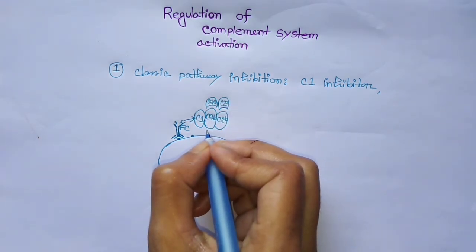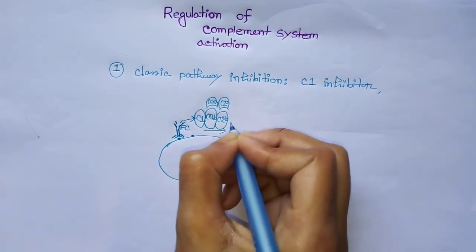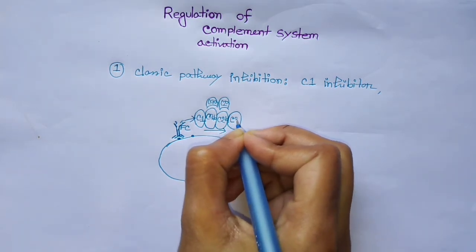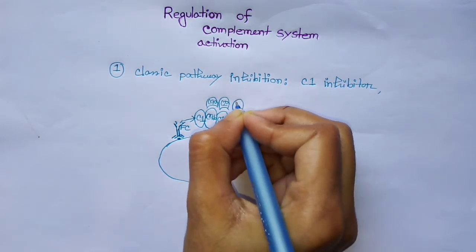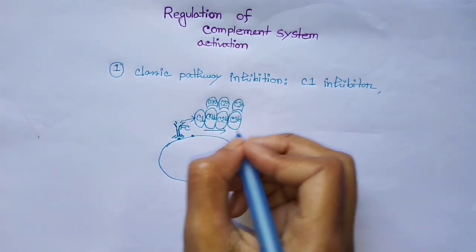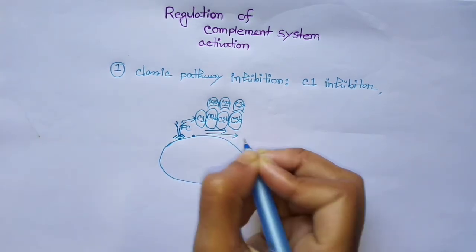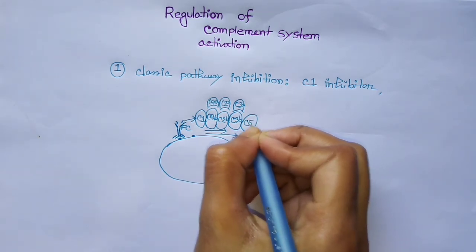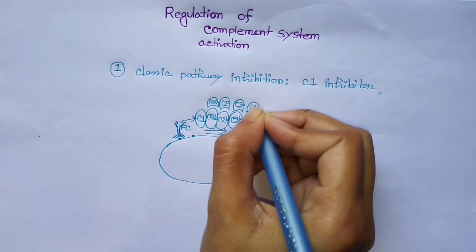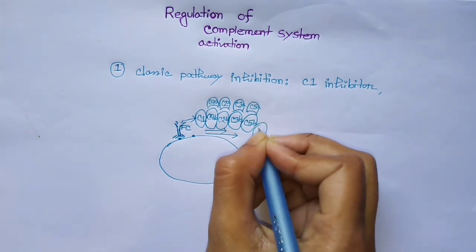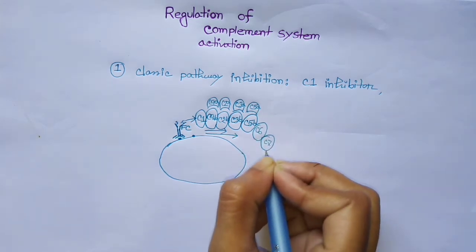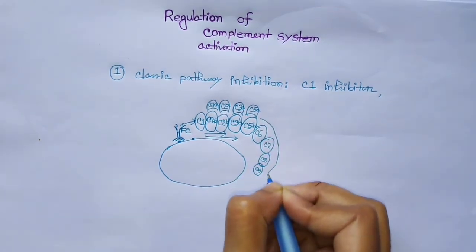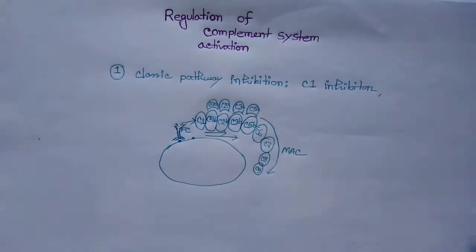Then C1 binds to C4, and C4 becomes fragmented into C4b and C4a, then C2b and C2a. Then C4b and C2b activate C3 and form C3b and C3a. Thus they produce C5, C6, C7, C8, and C9, which are the membrane attack complex. This is the classical pathway.